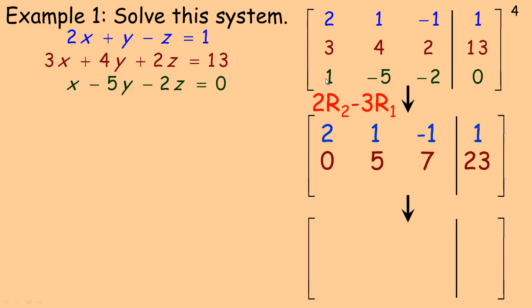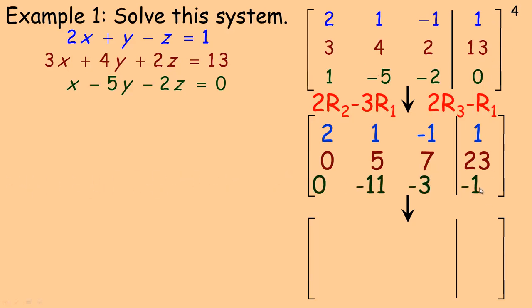Next, I'm going to work on changing the 1 in row 3 to a 0. The nice thing about having a 1 here is I can multiply row 3 by 2 — since row 1 already has a 2x term — and subtract them to eliminate x. 2 minus 2 is 0. Negative 10 minus 1 is negative 11. Negative 4 take away negative 1 is the same as negative 4 plus 1, so that's negative 3. And 0 minus 1 is negative 1. So the new row 3 is 0, negative 11, negative 3, negative 1.